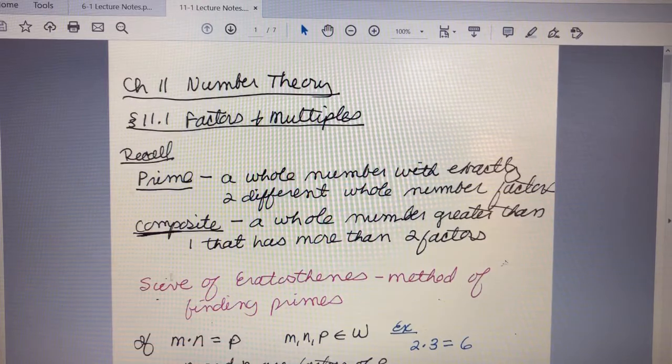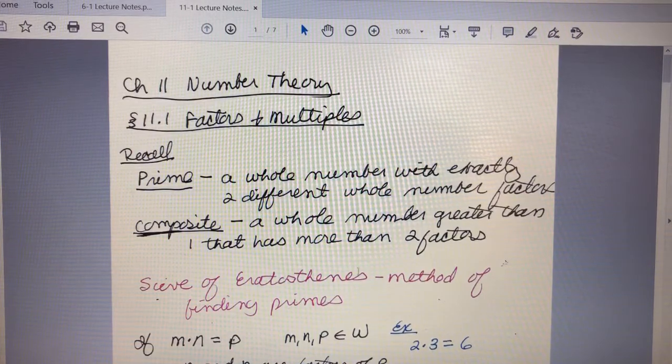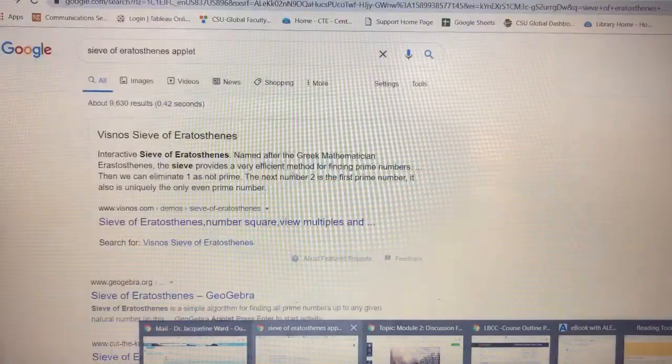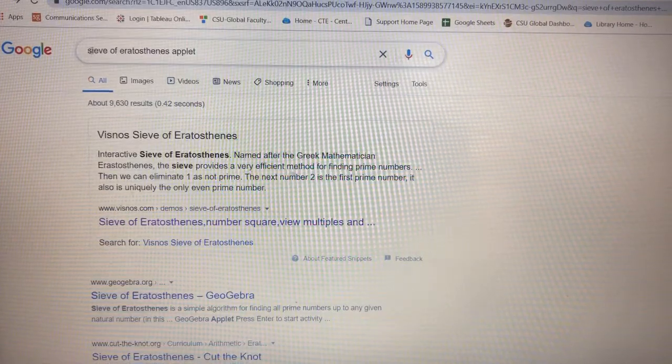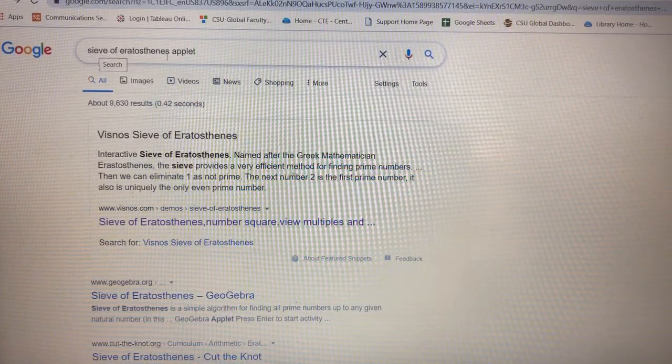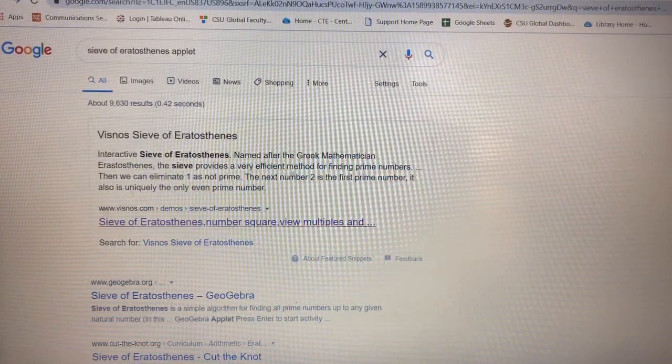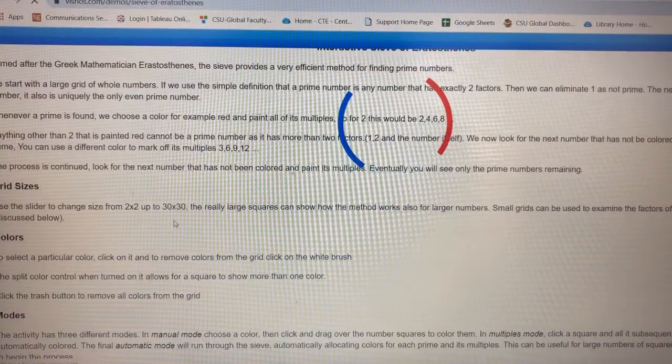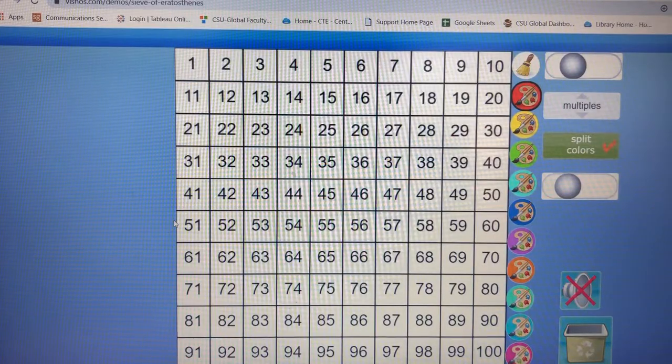We're going to start by looking at what's called the Sieve of Eratosthenes, which is a method of finding primes. I'm going to show you this little applet. If you pull up Google and enter 'Sieve of Eratosthenes applet,' the first one that shows up is this one at viznose. This is a neat little applet.